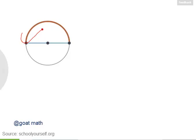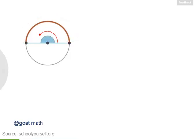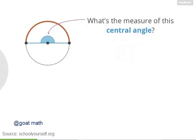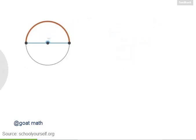Now our arc takes up half the circumference, and our central angle is a straight line. So what's the measure of the arc and the central angle? This central angle measures 180 degrees.